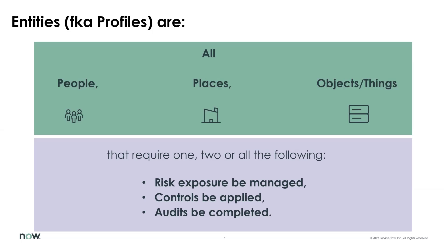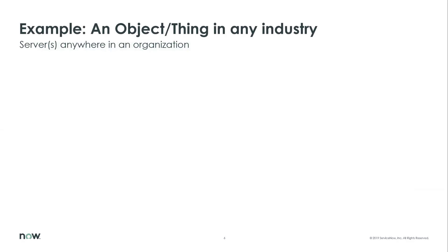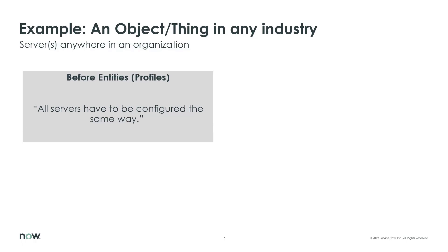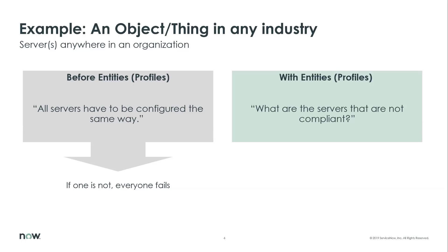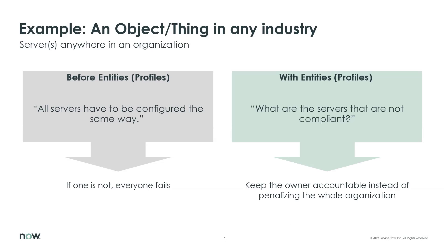That clarifies everything. Let's look at some examples, starting high and going a bit deeper. The first example — an object or thing in any industry: all servers have to be configured the same way. In traditional GRC, an auditor would take a sample of records, and if they found one server not configured correctly, they would fail the entire control test. With entities, we can assign a hardening control to each system. Of 10,000 servers, if 9,999 are compliant, we can focus on the one that wasn't, keeping individual server owners accountable rather than penalizing the entire organization.